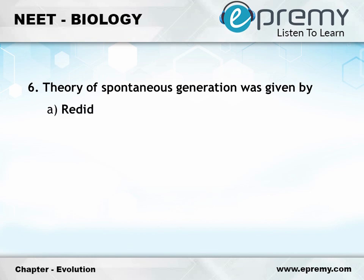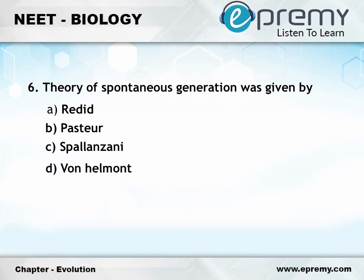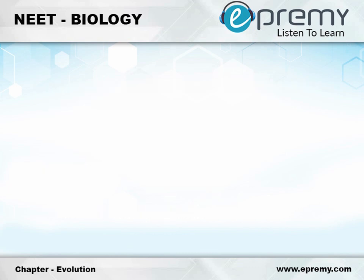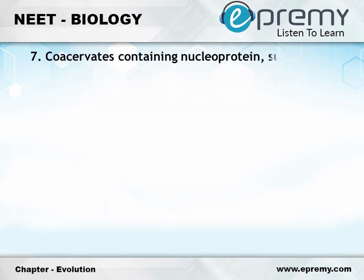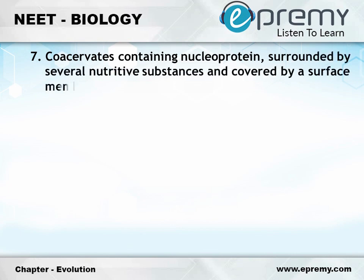Question number 6: Theory of spontaneous generation was given by. Option A: Reddy. Option B: Pasteur. Option C: Spallanzani. Option D: Von Helmont. And the answer is Option D: Von Helmont.